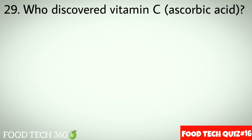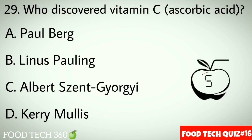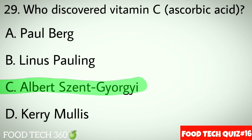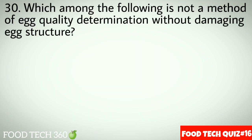Question No.29: Who discovered Vitamin C, ascorbic acid? Options A: Paul Berg. B: Linus Pauling. C: Albert Szent-Györgyi. D: Carimolis. Correct answer C: Albert Szent-Györgyi.